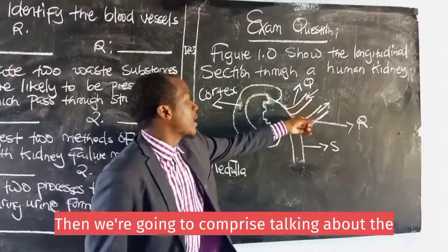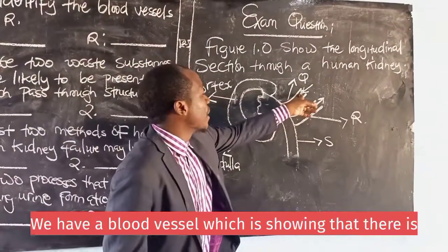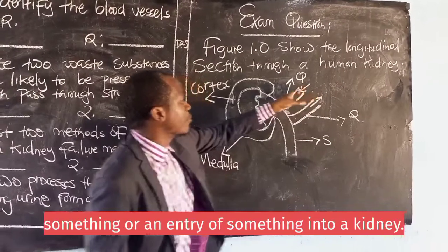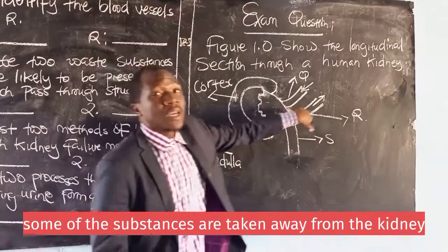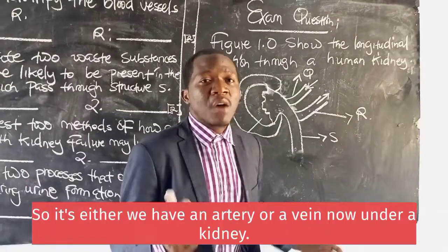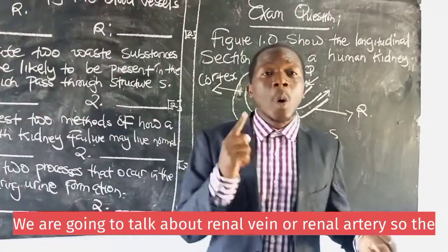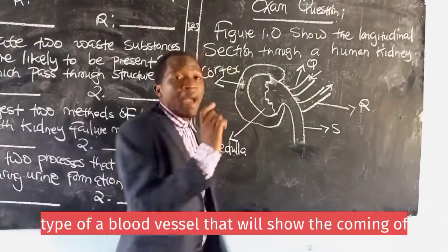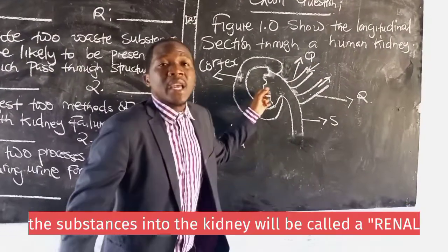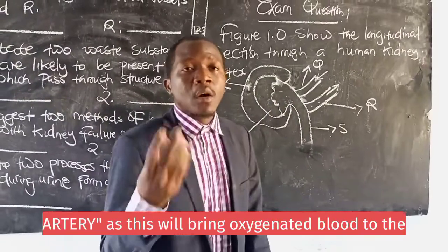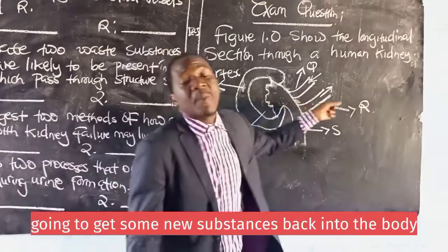We are going to talk about the category of blood vessels that are involved. We have a blood vessel showing the entry of something into the kidney, and another blood vessel showing that some substances are taken away from the kidney into the body — so it's either an artery or a vein. Under the kidney, we talk about the renal vein or renal artery. The blood vessel bringing substances into the kidney is called the renal artery, as it brings oxygenated blood to the kidney. The renal vein takes substances back into the body.